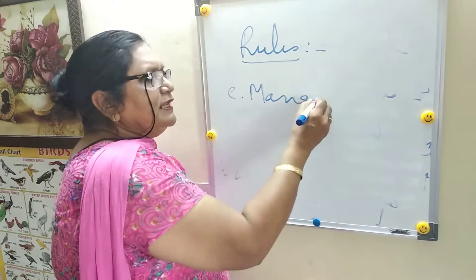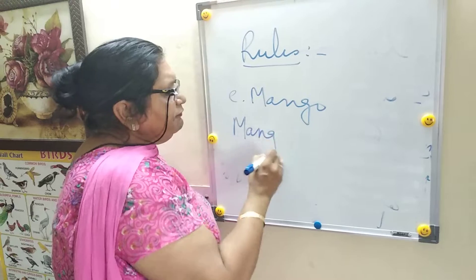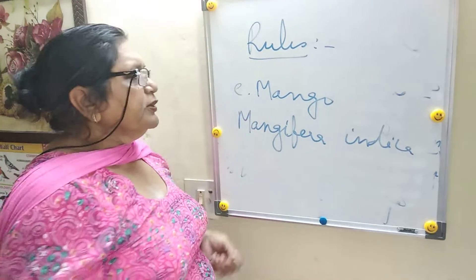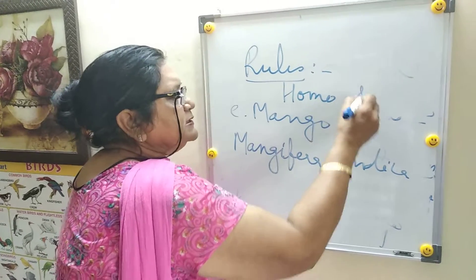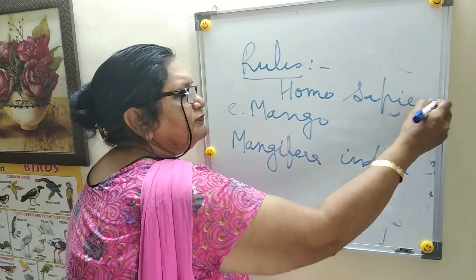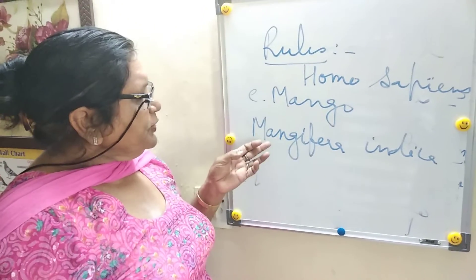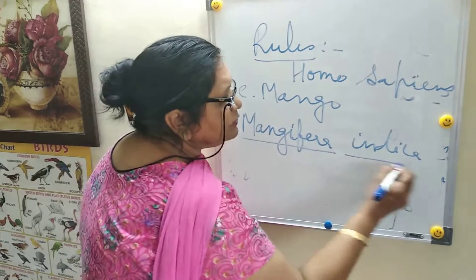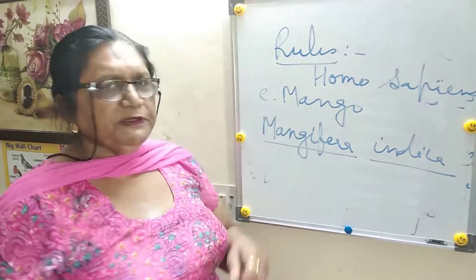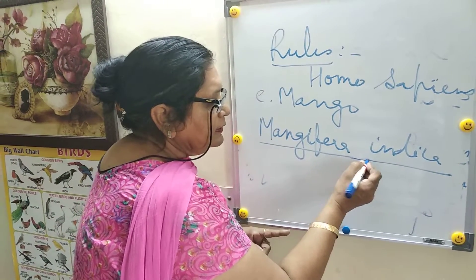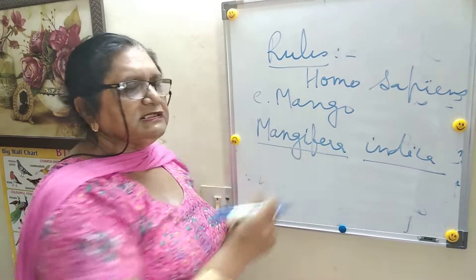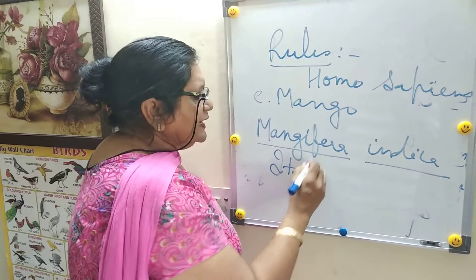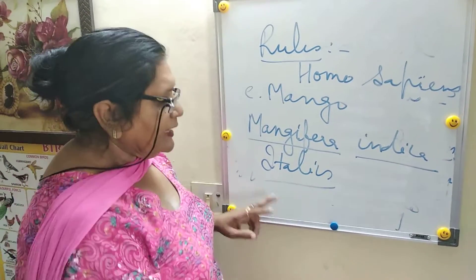Additional rules: if the name is handwritten, both the generic and species names are underlined separately — there must be a gap between them showing they are separate. If the name is printed in a book, it is written in italics, and in that case you do not underline it. If there is a variety or subspecies, the scientist's name comes after the species name.